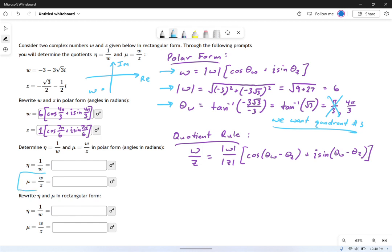I'm going to focus on this guy first, W over Z, because I think that's a little more straightforward. We have a formula for it right here. And all you do is you plug everything in that we already know from up top. We're going to plug that into our formula down here. So the modulus of W, for example, is six.